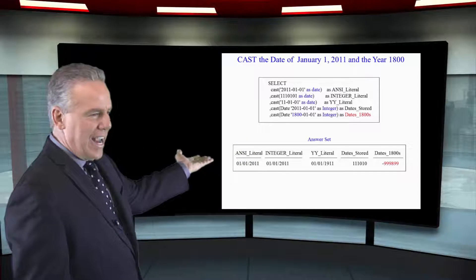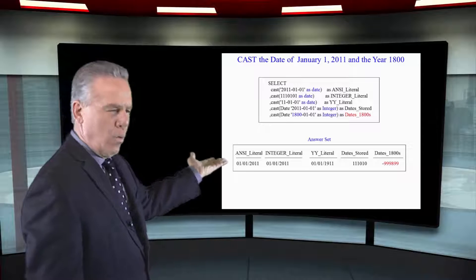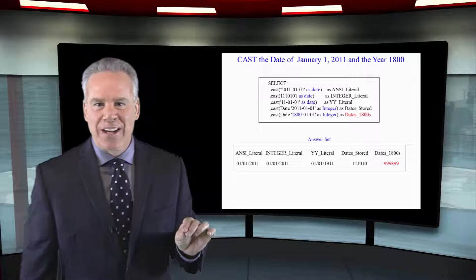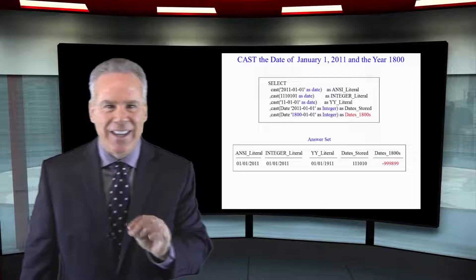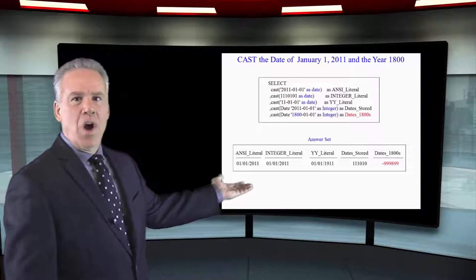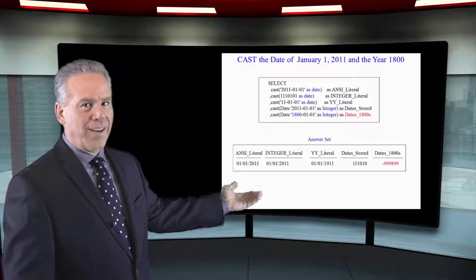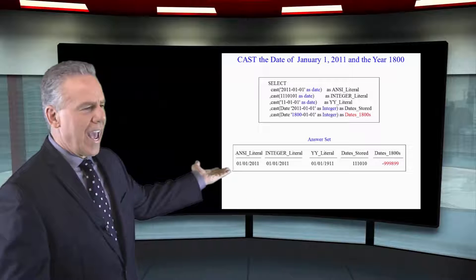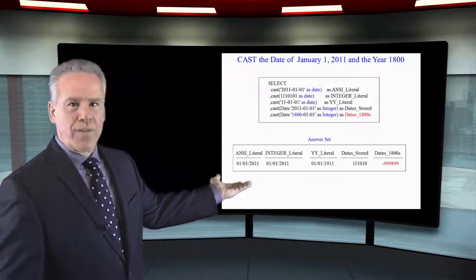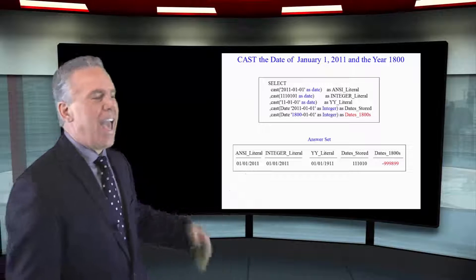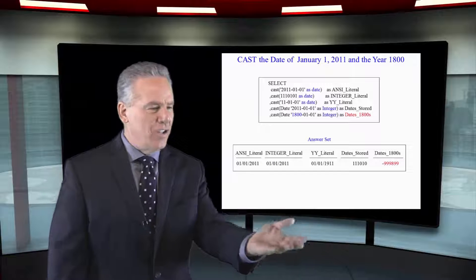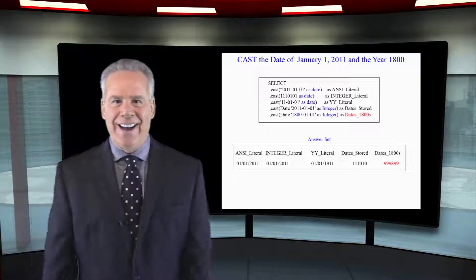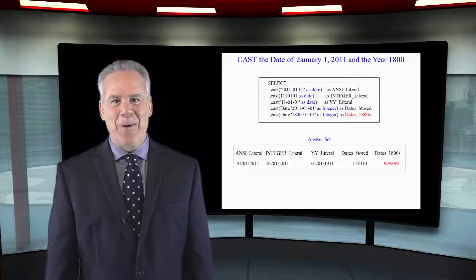Now we're going to CAST the date of 2011-01-01 as an integer, and it's going to show us how Teradata stores this internally — that's 110101. Now let's take a look at our 1800 date. We're going to CAST January 1st, 1800 as an integer, and as you can see it's minus 999899. That's the way it works.